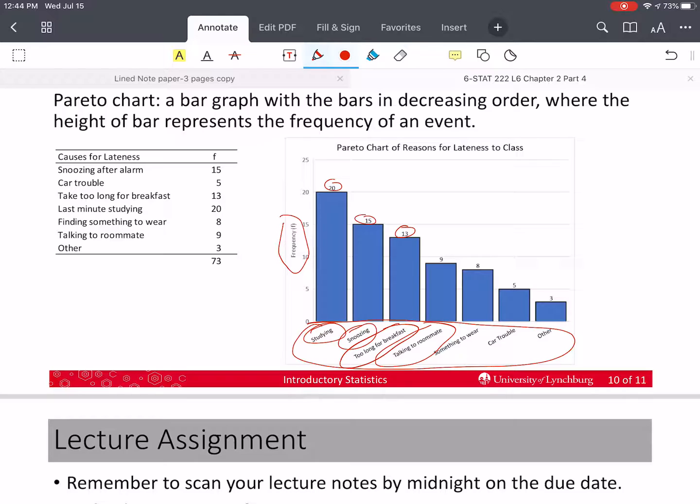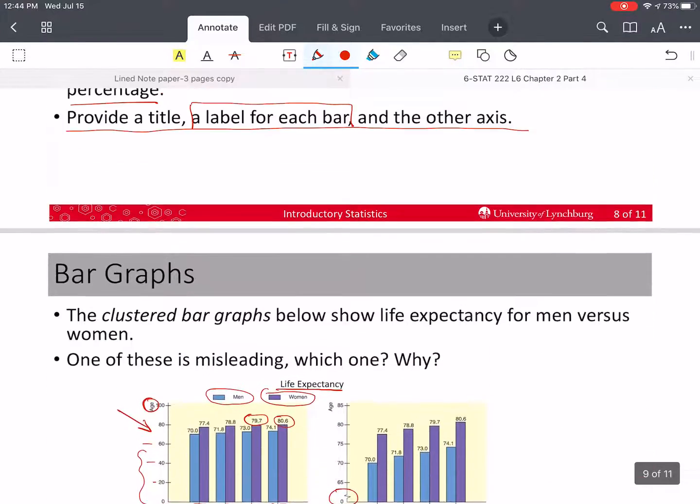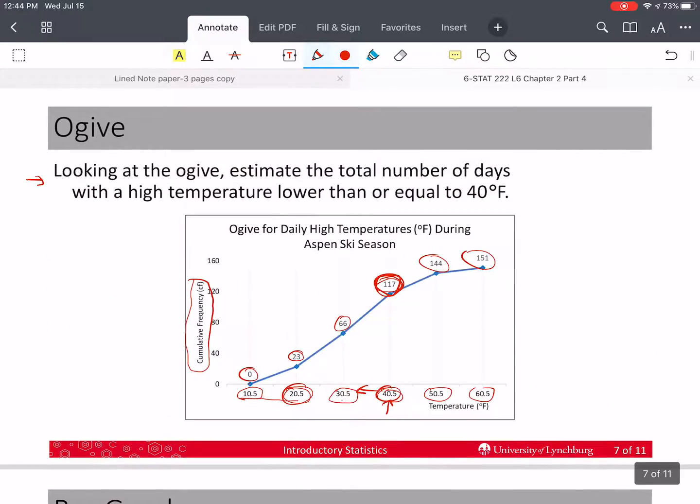So those are bar charts, Pareto charts, and we talked about an Ogive. Okay.